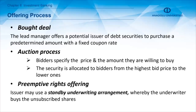The offering process can take different forms. In a bought deal, the lead manager offers a potential issuer of debt securities to purchase a predetermined amount with a fixed coupon rate. It could also be an auction process, where bidders specify the price and amount they are willing to buy, and securities are allocated from the highest bid price downward. Another type is a preemptive rights offering, where the issuer may use a standby underwriting arrangement in which the underwriter buys the unsubscribed shares.